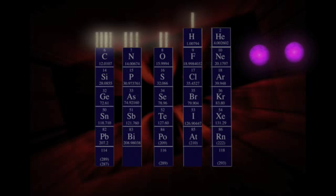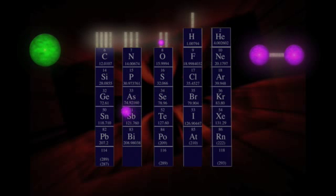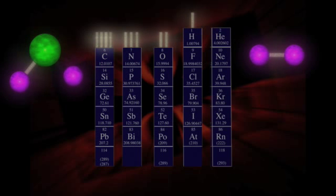Another example is water. We can see that oxygen wants to make two bonds, because it is in the second column from the right. So it can get together with two hydrogen atoms, which each want to make one bond. And all three atoms are happy.